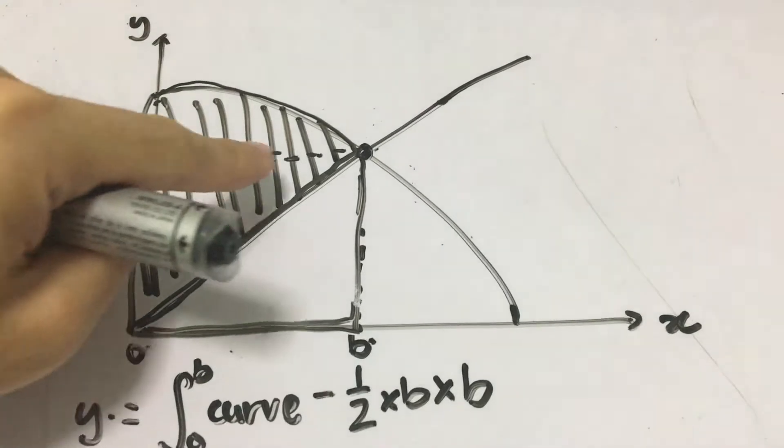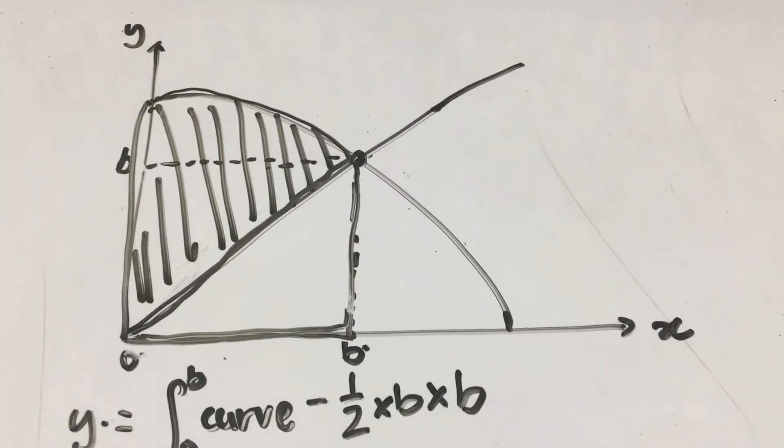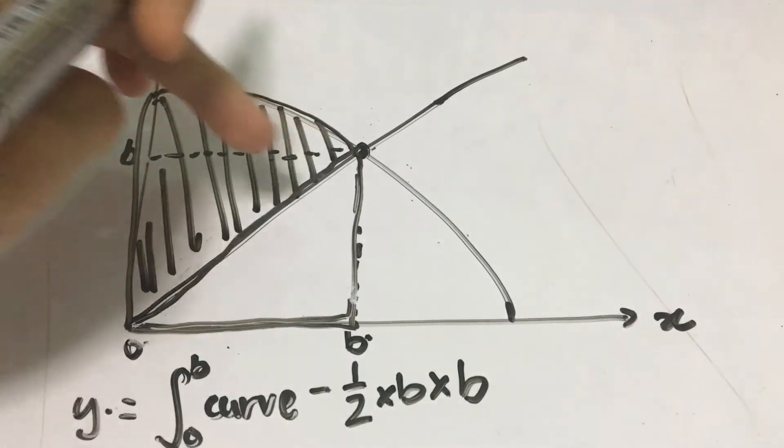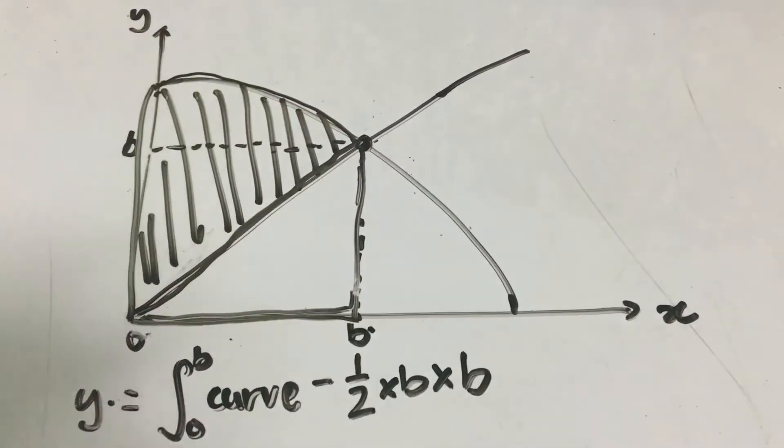This dotted line is what I call the invisible line because originally when you are given the question, you are not given this particular line. You have to draw it yourself.